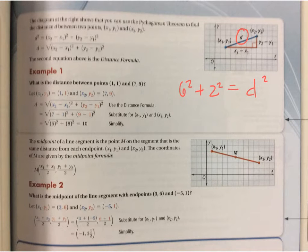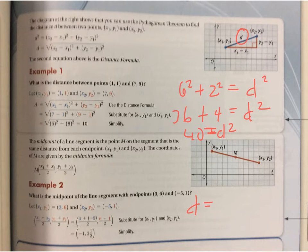So I'd get 36 plus 4 equals D squared. And we could say 40 equals D squared. So D becomes the square root of 40, which I mean, you could solve for pretty easily by putting a calculator.